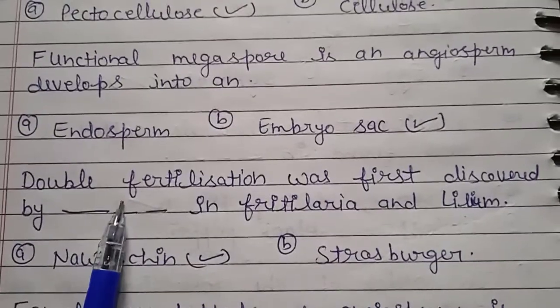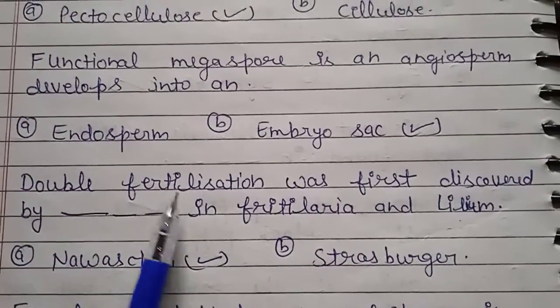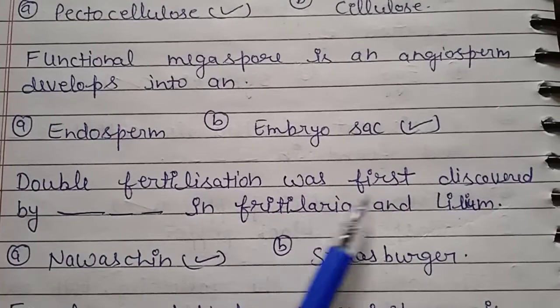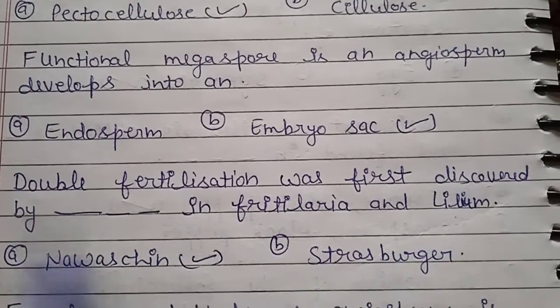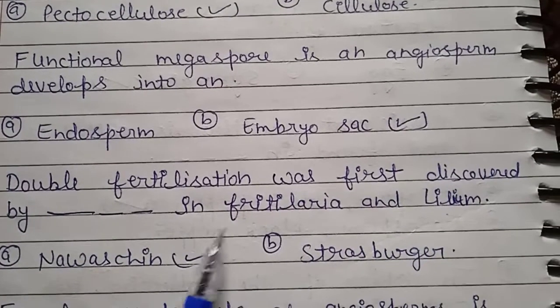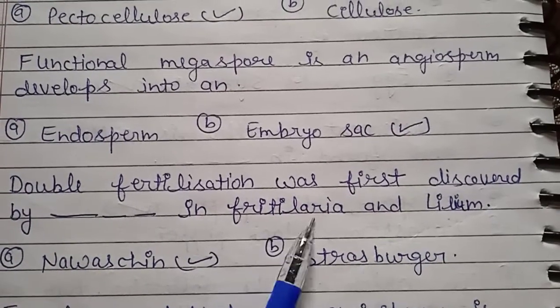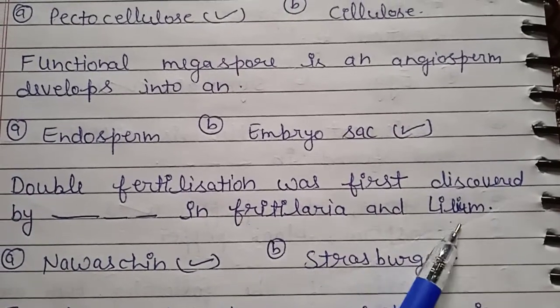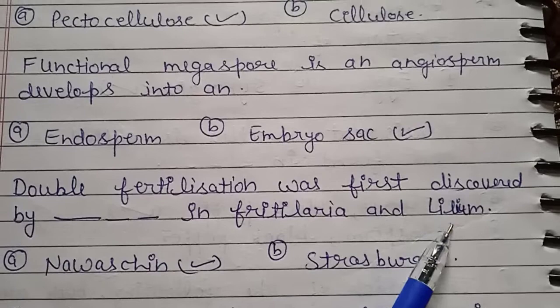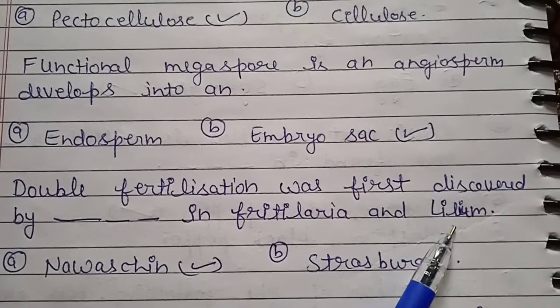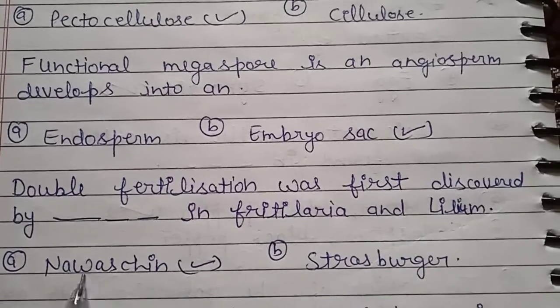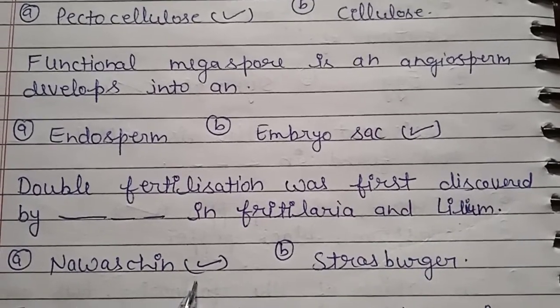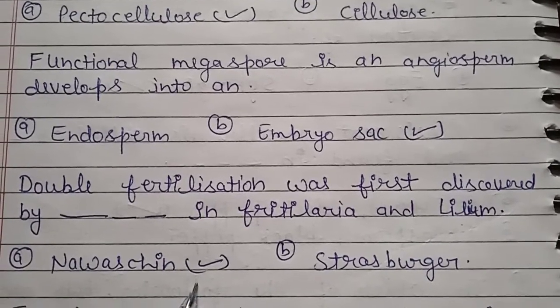Question number 10: double fertilization was first discovered by whom? It was first discovered in Fritillaria and Lilium, and the discoverer was Navaschin. So the right answer is Navaschin.